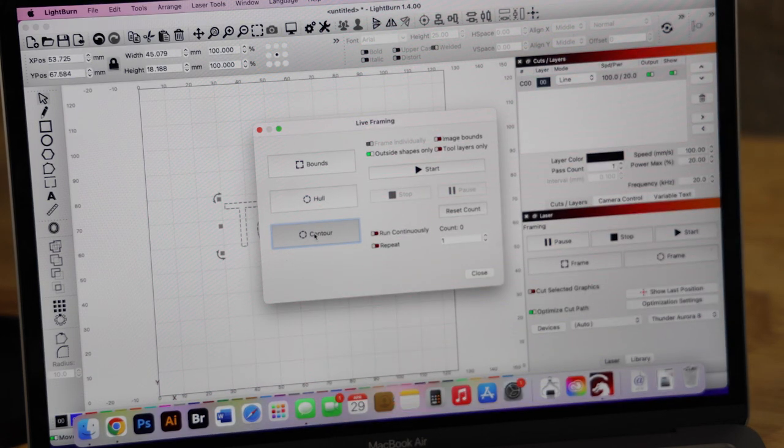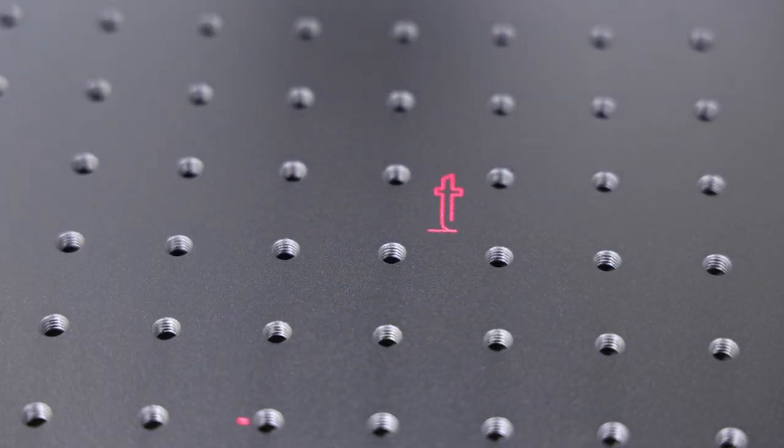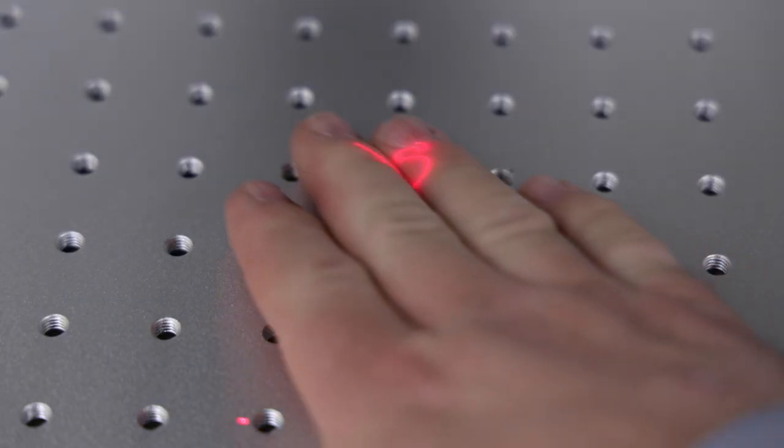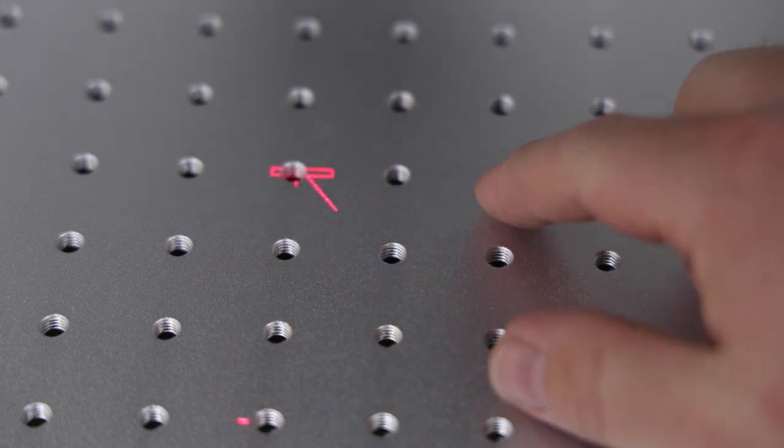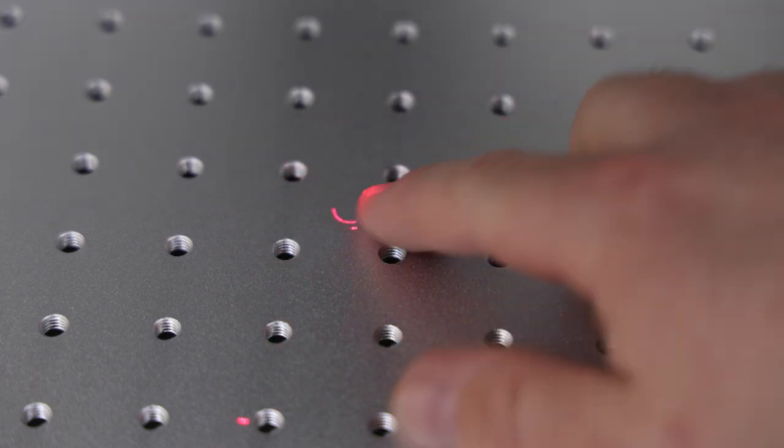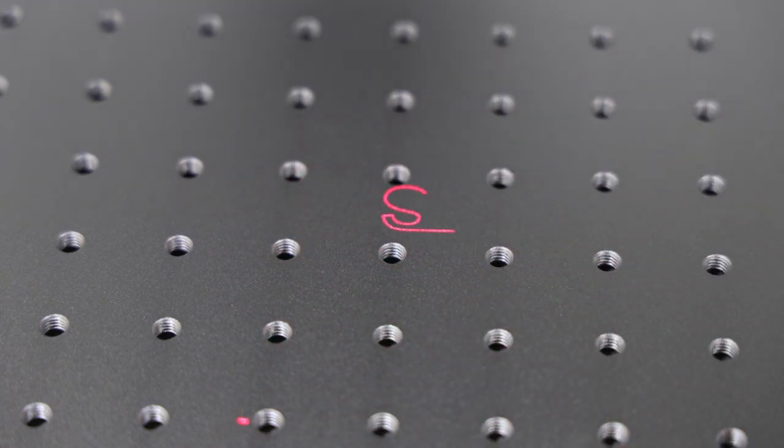Now let's look over here on the laser bed itself. So as you can see now, it is actually framing it so you could place your object right where you needed it to, showing you exactly where the word test is going to be.